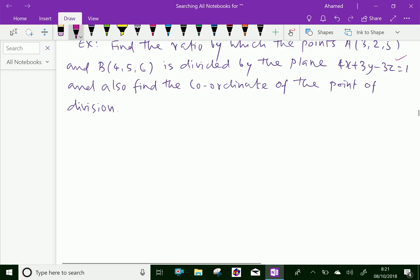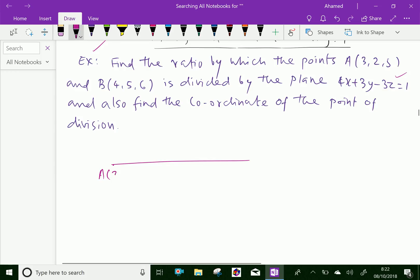Now, let the point A is (3,2,5) here and the point B is here as (4,5,6). The point of division is, let it be C, that is point (x,y,z) which divides in the ratio k is to 1. We let the ratio is k is to 1.